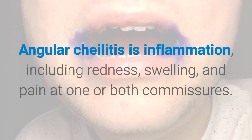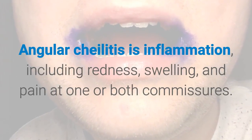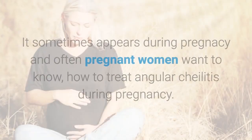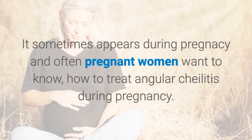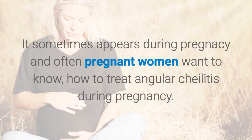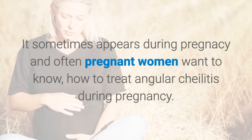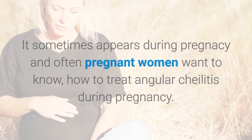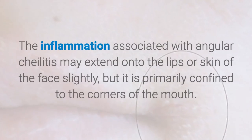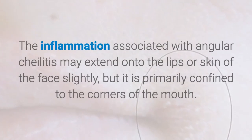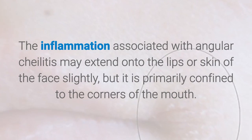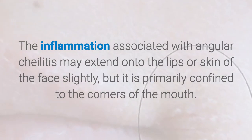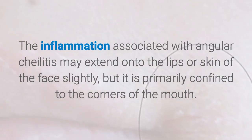Angular cheilitis is inflammation, including redness, swelling, and pain at one or both commissures. It sometimes appears during pregnancy. The inflammation associated with angular cheilitis may extend onto the lips or skin of the face slightly, but it is primarily confined to the corners of the mouth.